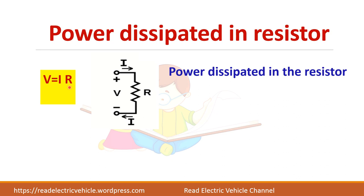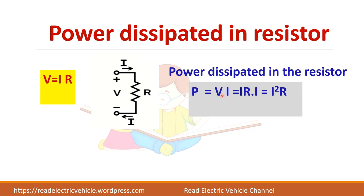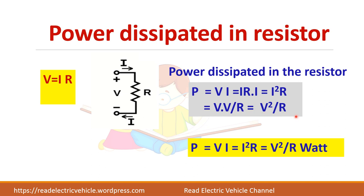We know V equals IR, so the power dissipated P equals V times I. Substituting V as IR, we get I squared R. Alternatively, substituting I as V by R, we get V squared by R. So power can be written as VI, or I squared R, or V squared by R. The unit of power is watts.